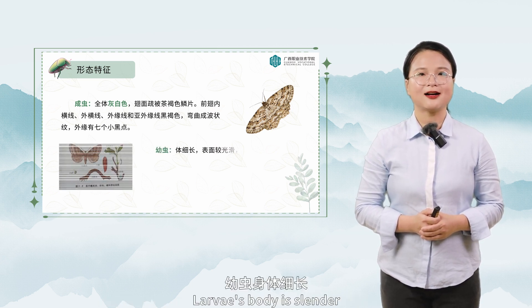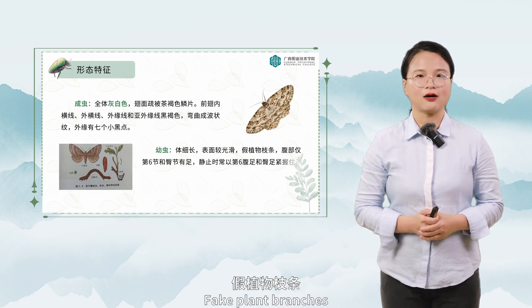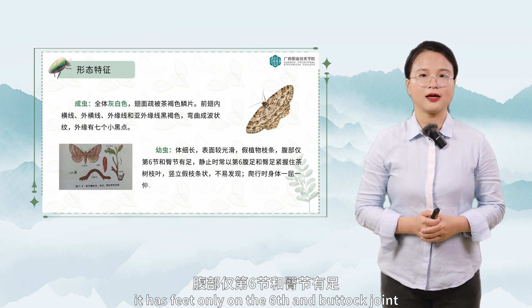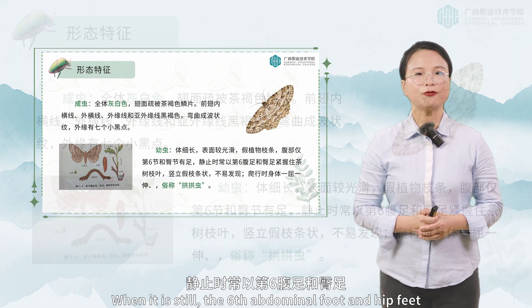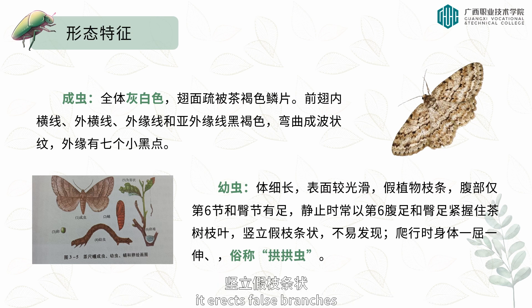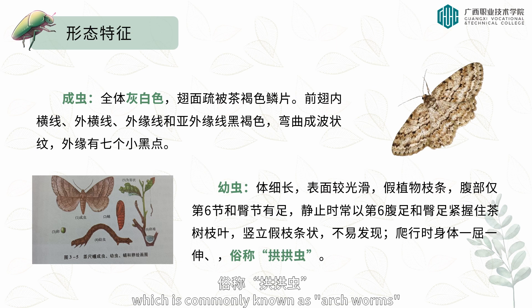The larvae's body is slender and the surface is smooth, resembling fake plant branches. They have feet only on the sixth and buttock joints. When still, the sixth abdominal foot and hip feet are often used to hold the branches and leaves of the tea tree, erecting like false branches, which makes them not easy to find. When crawling, the body bends and stretches, which is why they are commonly known as archworms.